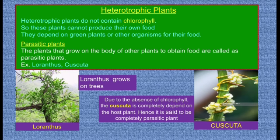Examples include Loranthus — you must have seen Loranthus grows on mango trees. Next is Cuscuta, a yellow wire-like climber plant growing on big trees. Due to the absence of chlorophyll, Cuscuta is completely dependent on the host plant; hence it is said to be a completely parasitic plant.